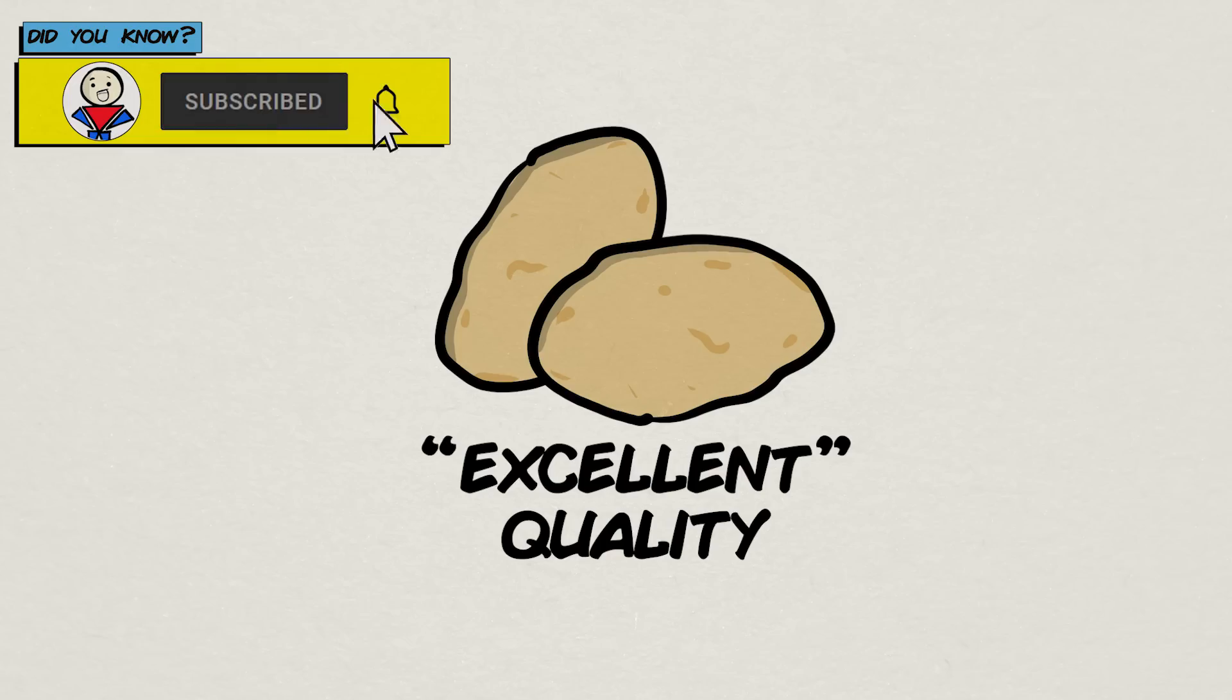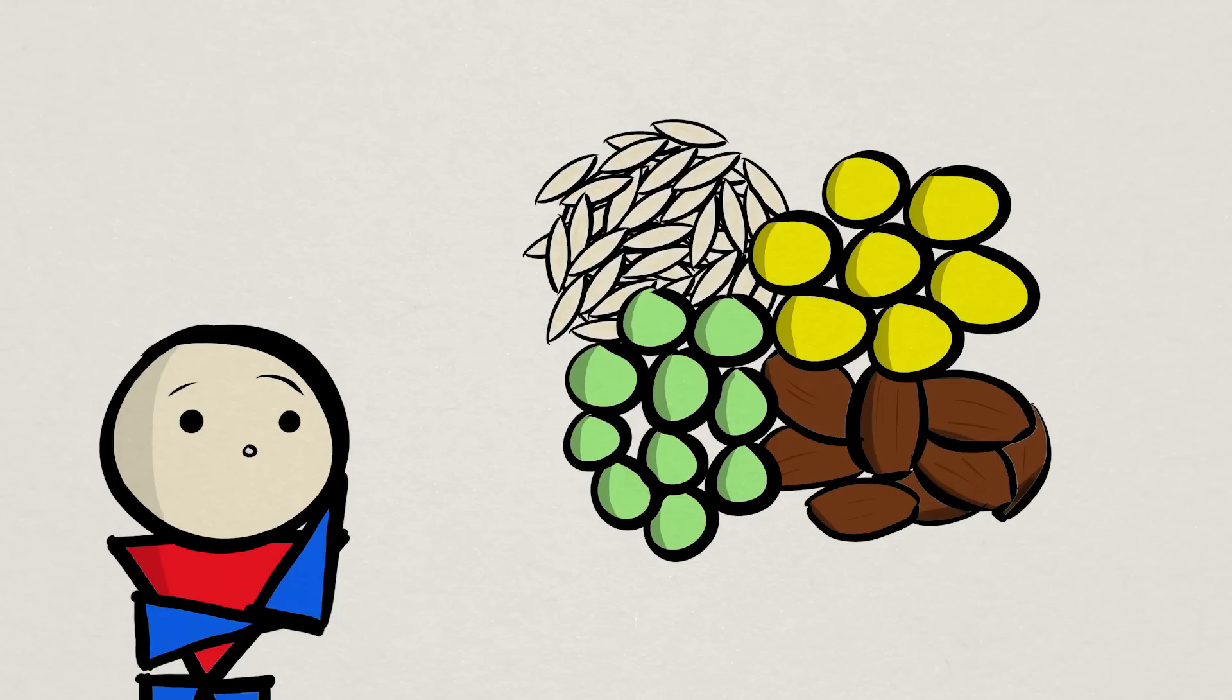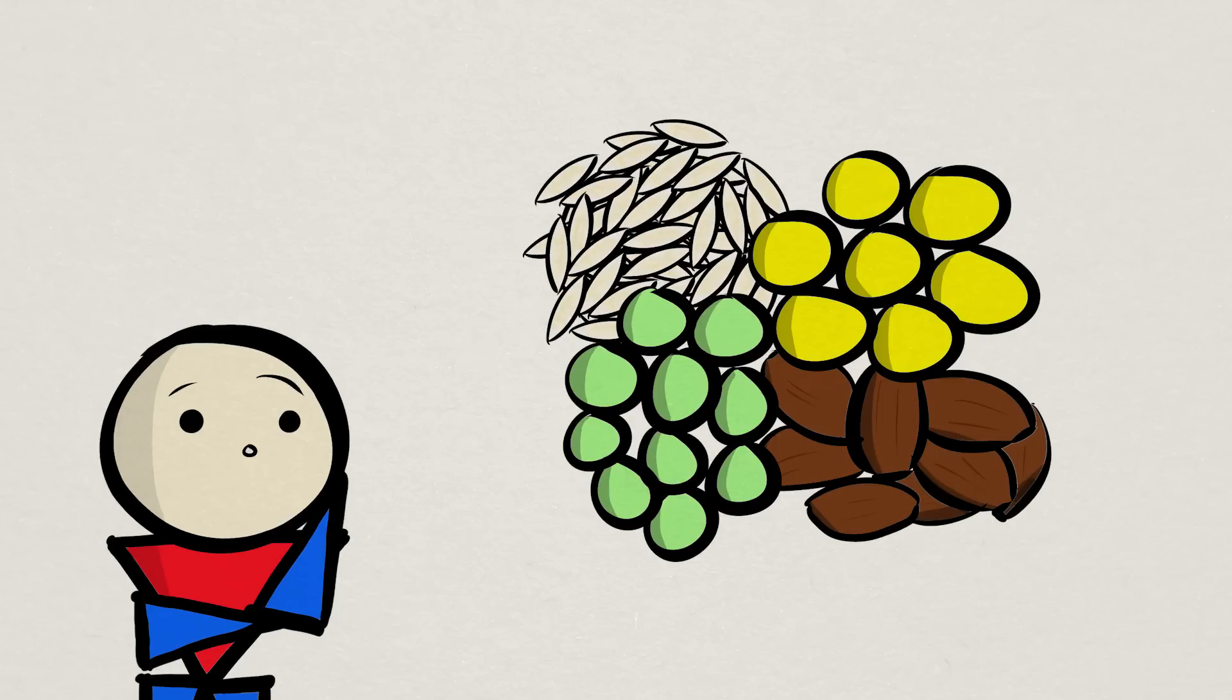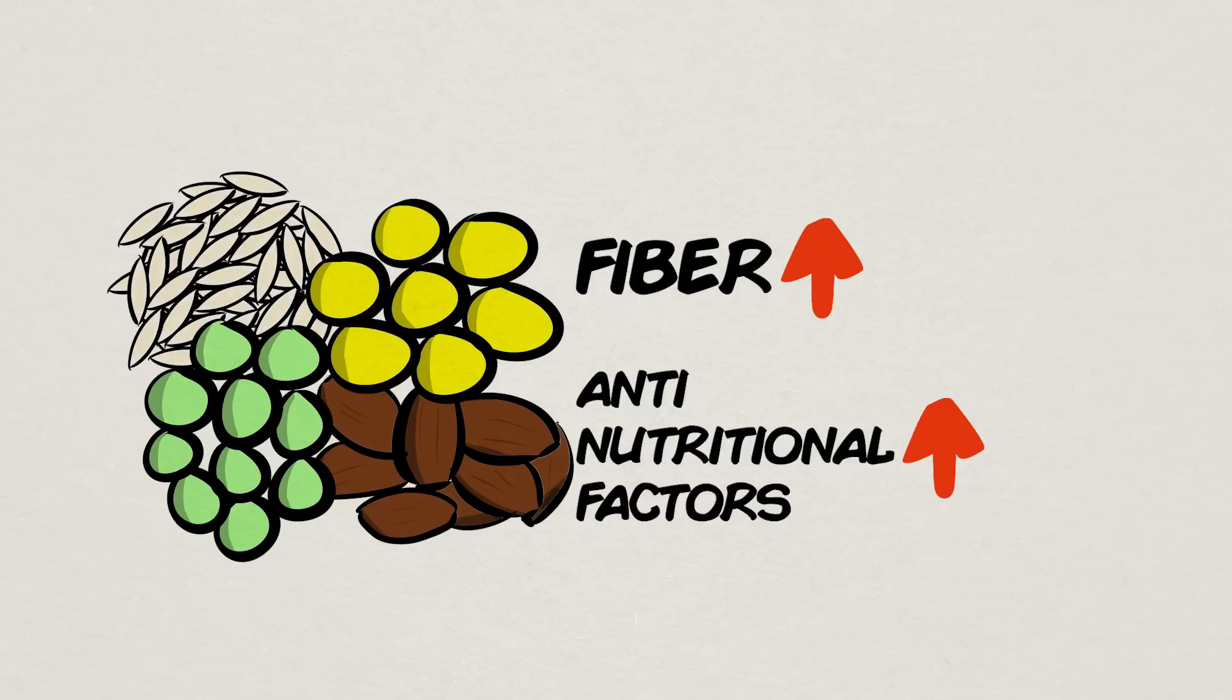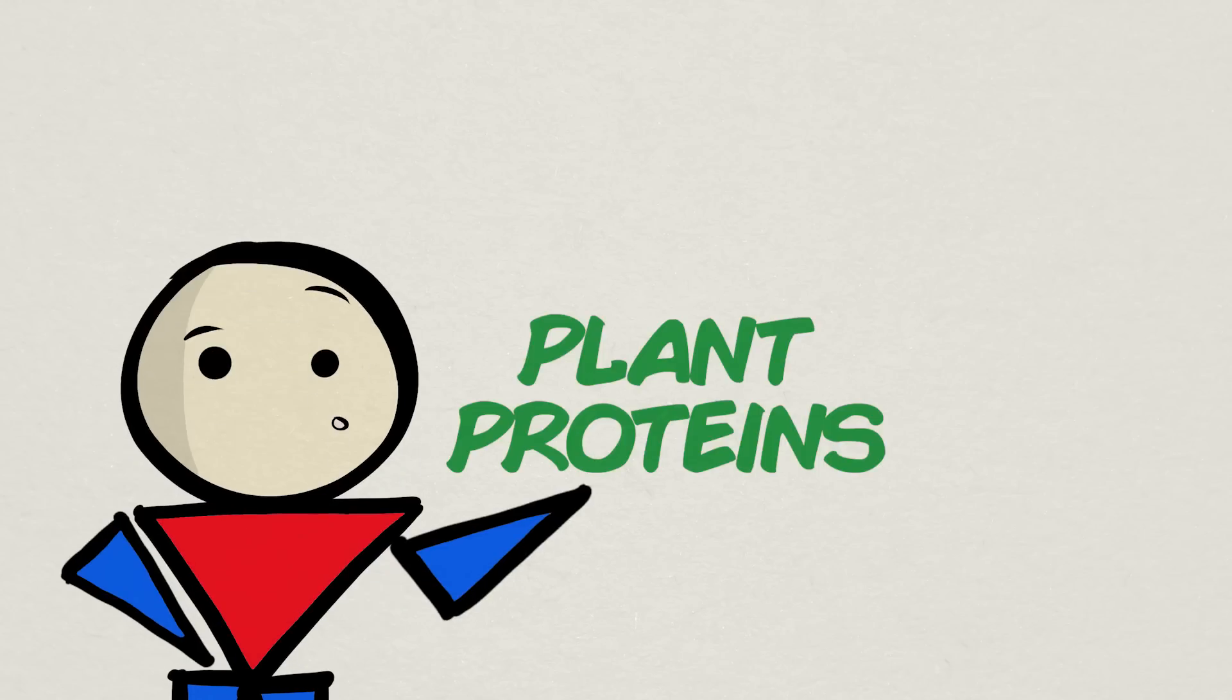In reality, most plant proteins do tend to have lower quality amino acid profiles, whether they lack a specific essential amino acid or just don't have sufficient amounts overall. Plant-derived proteins also tend to contain more fiber and anti-nutritional factors, which can affect digestibility and absorption, which of course then reduces its biological value. So based on what we see so far, yes, plant proteins do seem to be lower quality.